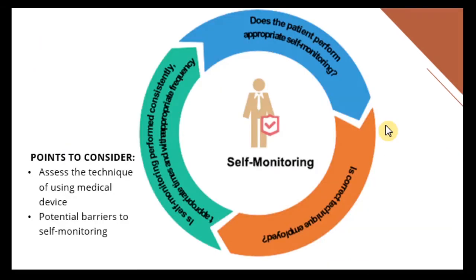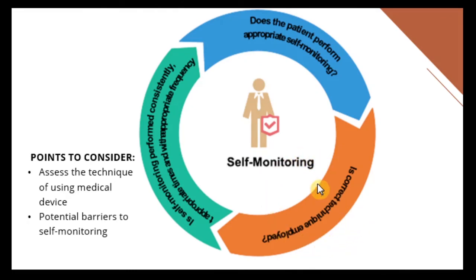Next is self-monitoring. Does the patient perform appropriate self-monitoring? This is more important in patients with chronic diseases who need to regularly self-monitor their parameters. For example, blood pressure for hypertension patients or glucose level for diabetic patients. Even if the patient monitors regularly, we need to check whether they are using the correct technique, such as using a BP monitor correctly.